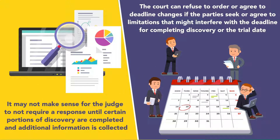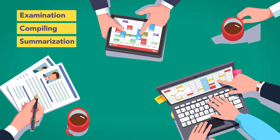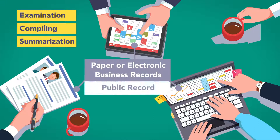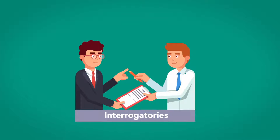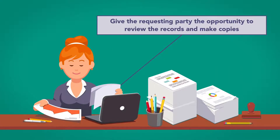The court can refuse to order or agree to deadline changes if the parties seek or agree to limitations that might interfere with the deadline for completing discovery or the trial date. If answering an interrogatory requires the examination, compiling, or summarizing of paper or electronic business records, and the burden of going through such documents would be the same to either party — such as when both parties have access to those documents or the documents are a matter of public record — then rather than answering the interrogatory in writing, the responding party may simply specify which documents must be reviewed to answer that question.